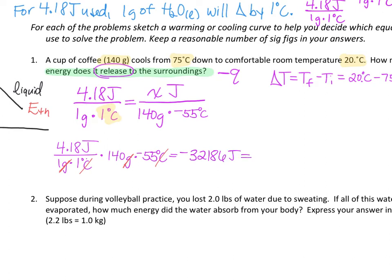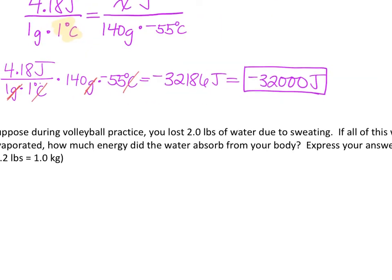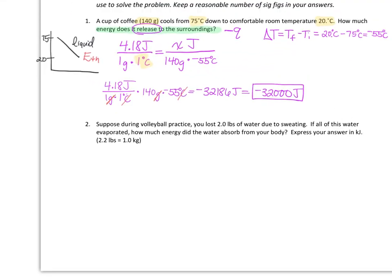And it looks like here we want to go with two significant figures, so we're going to make this negative 32,000 joules of energy released. Okay, our second example will be our last one we'll do together. And this one, suppose that during a volleyball practice you lost two pounds of water due to sweating.